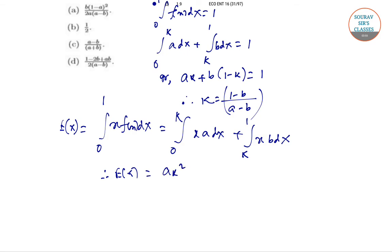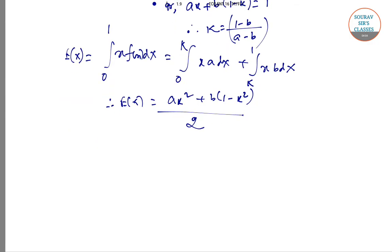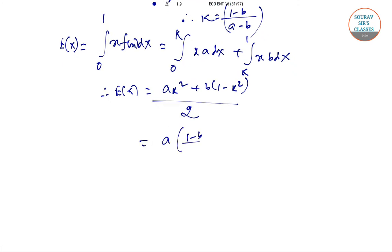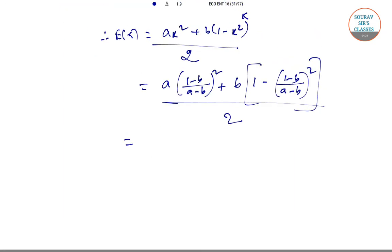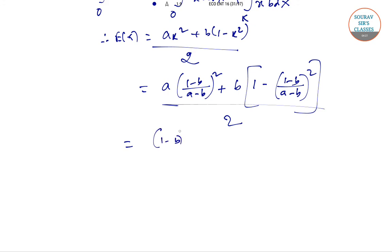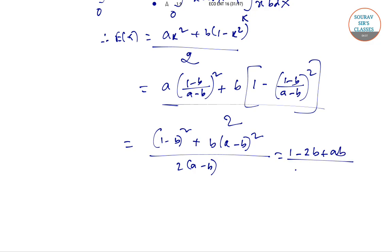Integrating directly gives us a·k²/2 + b·(1 − k²)/2. Substituting k = (1 − b)/(a − b), we get a·((1 − b)/(a − b))² + b·(1 − ((1 − b)/(a − b))²), all divided by 2. After simplification, the final result is (1 − 2b + ab) / (2·(a − b)).